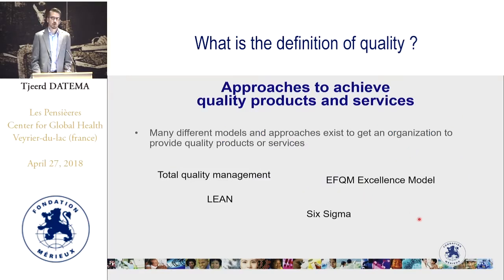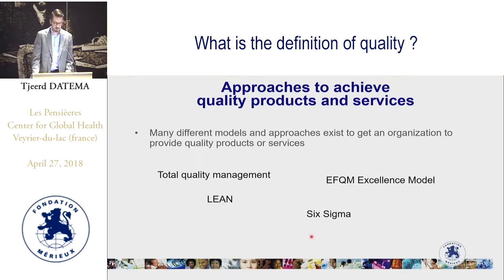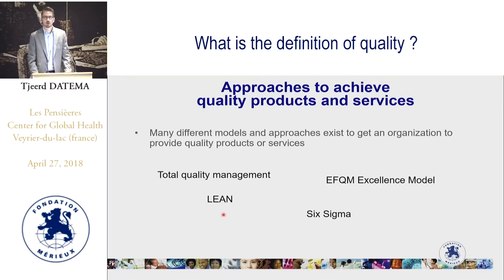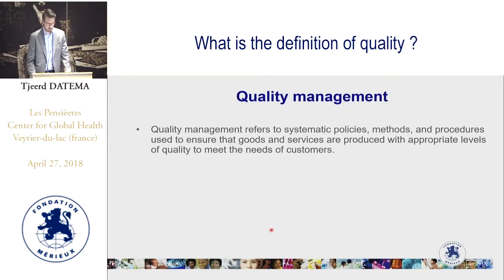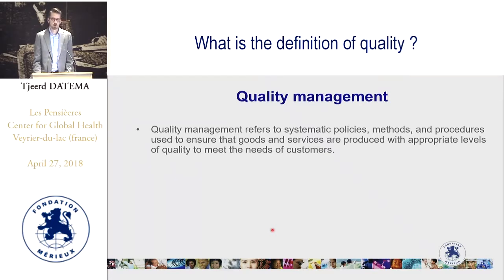Nowadays there are many different models of quality management: the total quality management model, the EFQM excellence model, lean systems, Six Sigma — just to mention a few. Lean and Six Sigma really focus on minimizing or eliminating unnecessary processes to ensure a quality product and an efficient production process. But in essence, all these different models are the same thing: they refer to the systematic implementation of policies, methods and procedures to ensure that goods and services are produced with appropriate levels of quality and to meet the needs of the customers — which is really the definition of quality management.